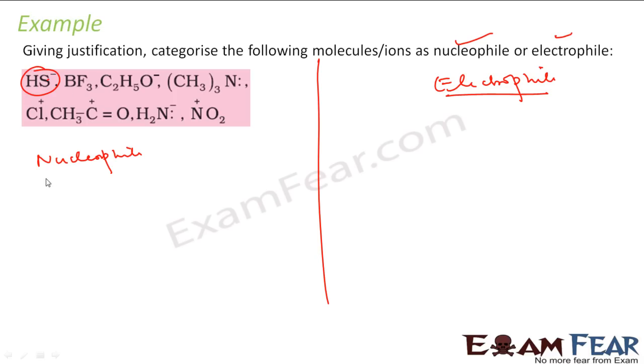First is HS-. HS- has negative charge. So negative charge means what? It has extra electrons. Electrons, that means it will have affinity towards nucleus. It has extra electrons, so it has affinity towards nucleus. So it becomes nucleophile. Nucleophile will have negative charge, electrophile will have positive charge. It has negative charge, just put in the category of nucleophile.